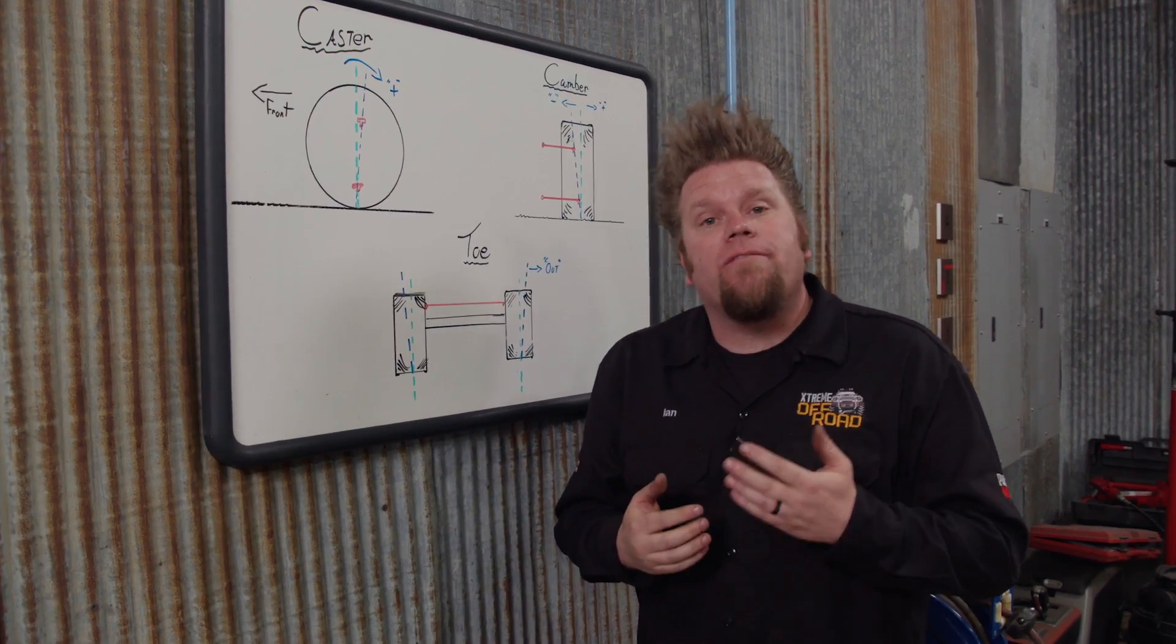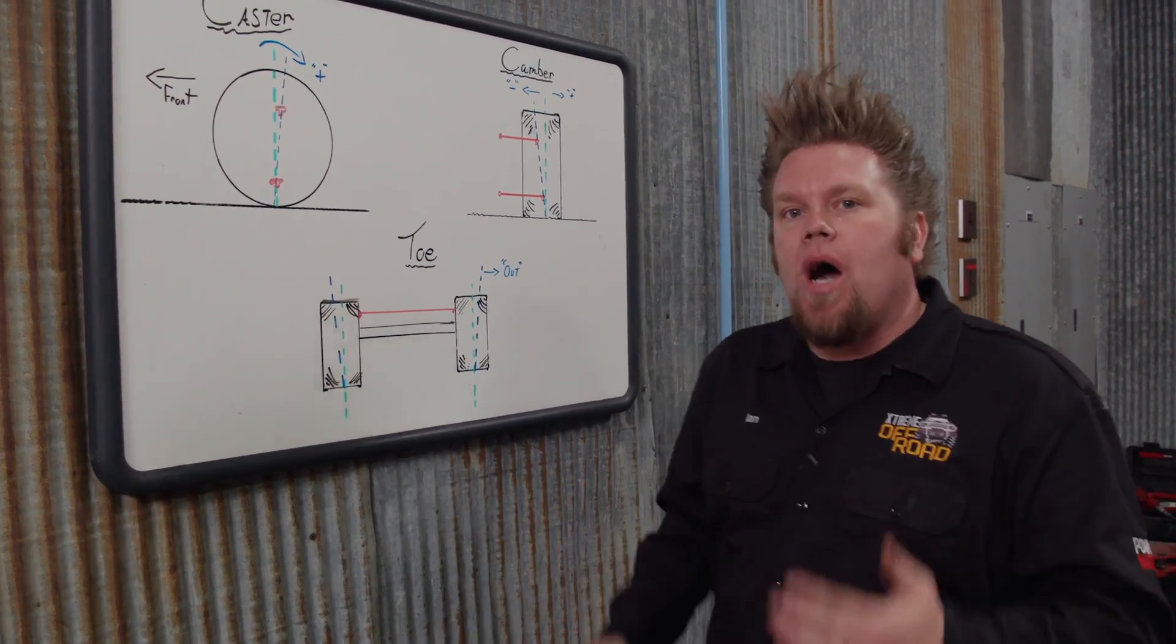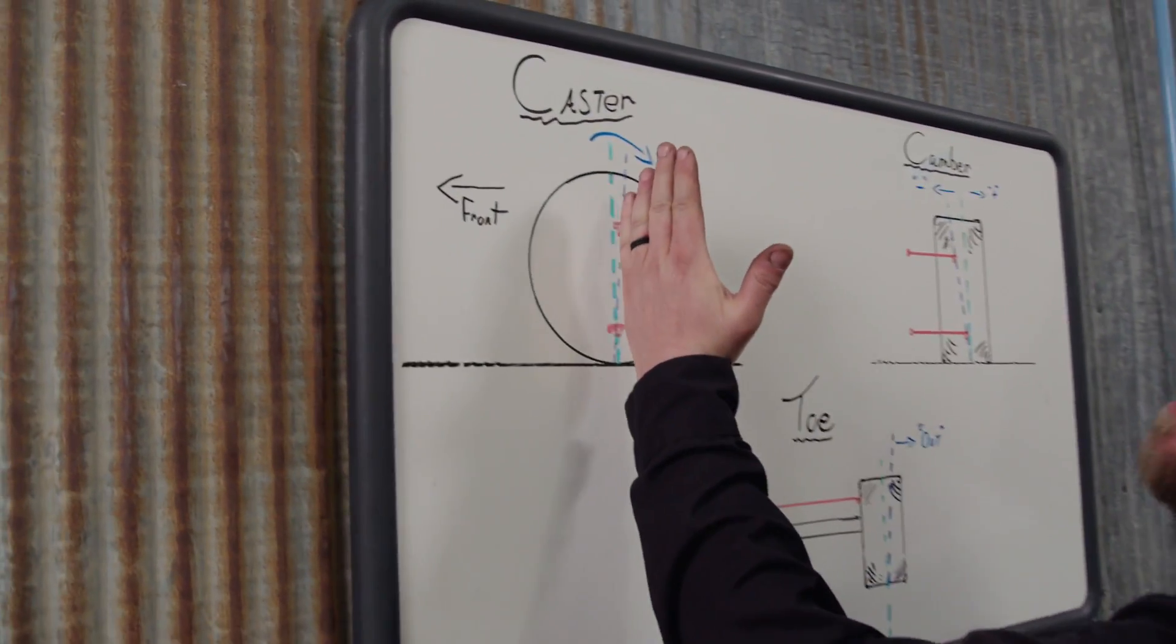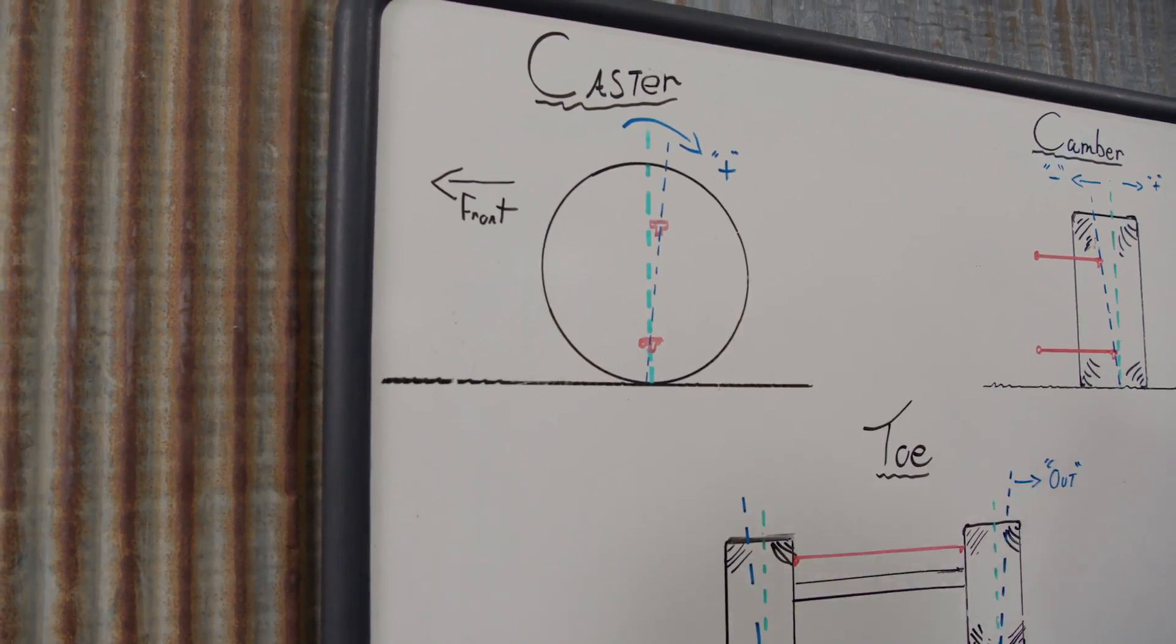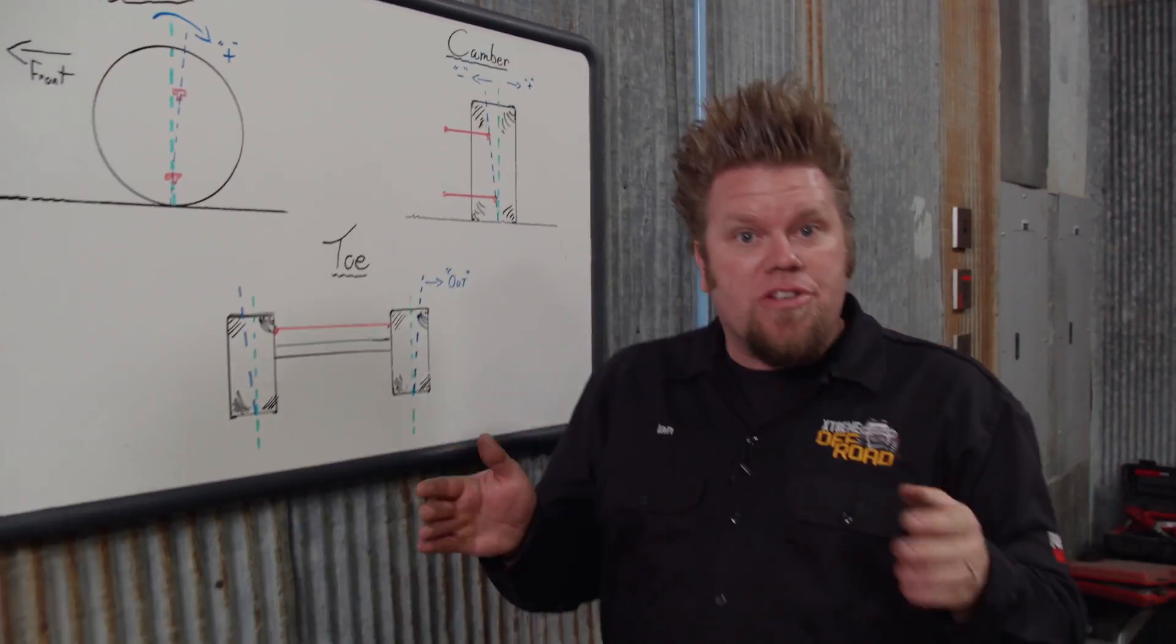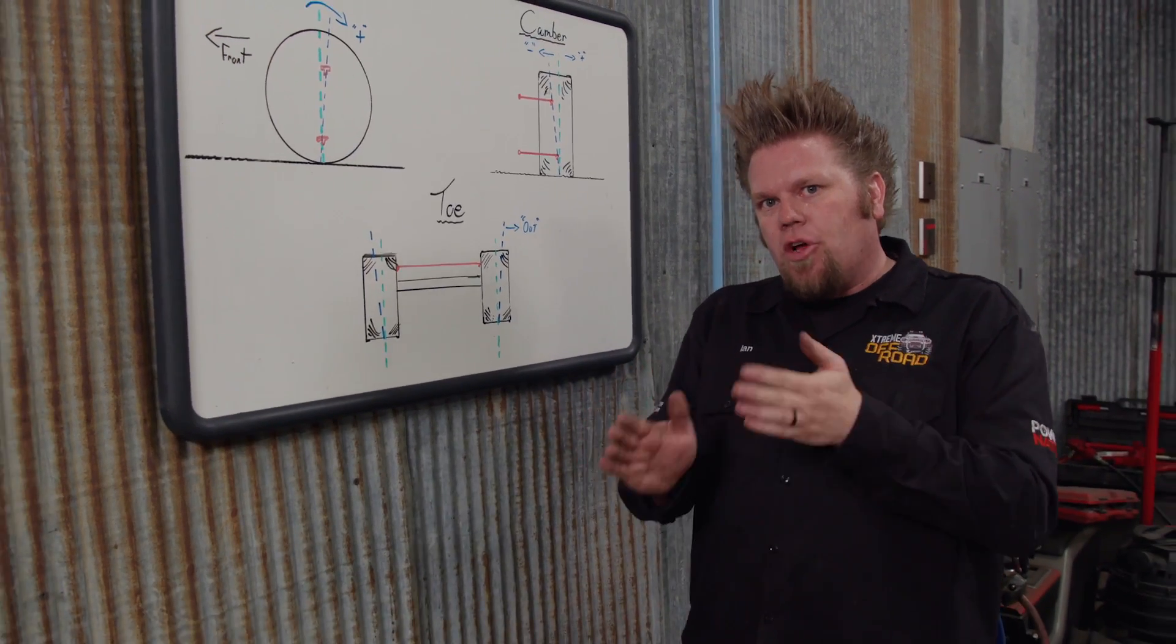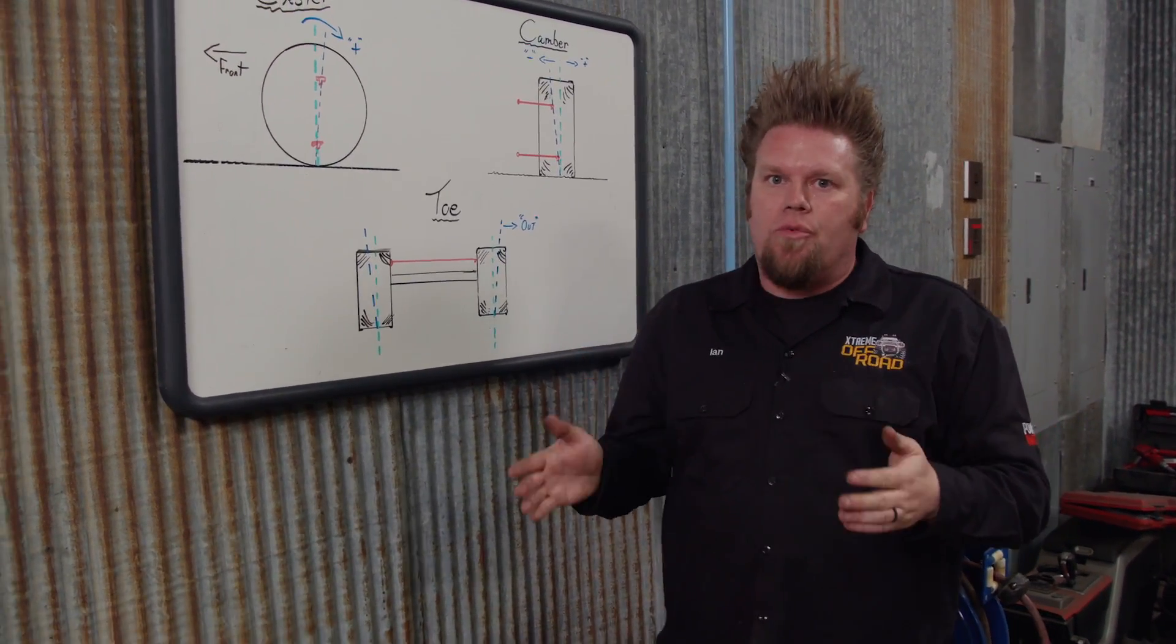I like to run between five and seven degrees of positive caster. That means the pivot points are leaning back towards the driver. Caster helps the tires self-center after a turn and also helps the vehicle track straight down the road.